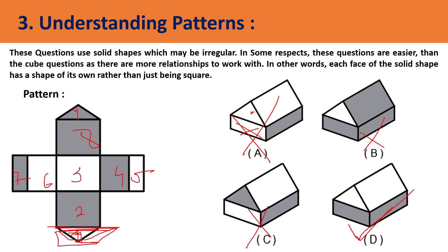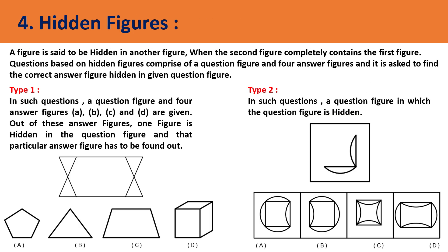See if the shapes visible are shaded and match them with the options given. Now talking about hidden figures: a figure is said to be hidden in another figure when the second figure completely contains the first figure. Questions based on hidden figures comprise a question figure and four answer figures, and you must find the correct answer. In type one, a complete figure is given and you have to see which figure can be made out of it.